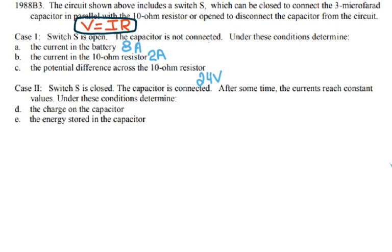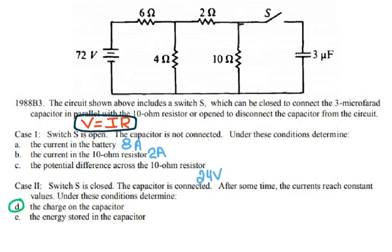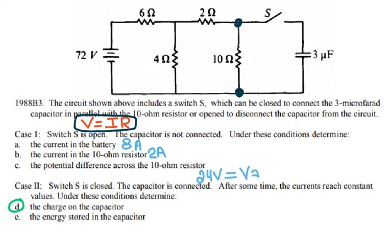For case two, switch S is closed and the capacitor is connected. After some time the currents reach constant values. To find the charge on the capacitor: when the switch is closed, current flows through the capacitor briefly, but once fully charged it acts as an open switch. The voltage on the capacitor equals the voltage on the 10 ohm resistor. The voltage across A-B was 24 volts and the current was 2 amps.